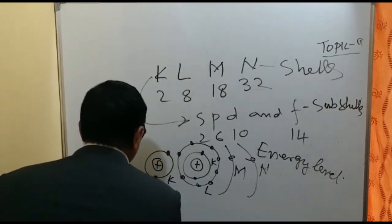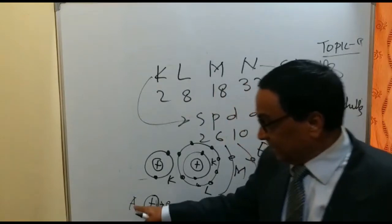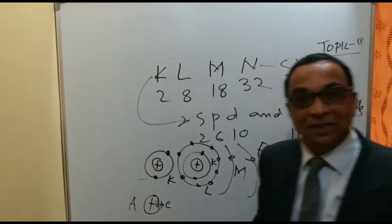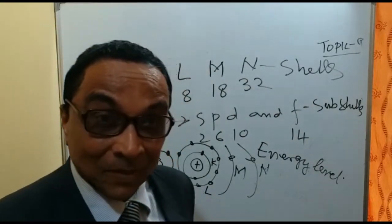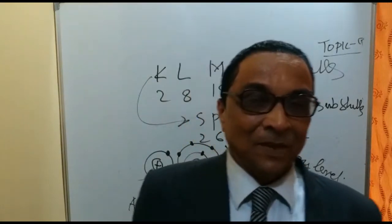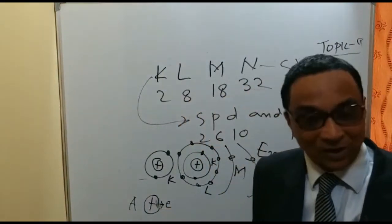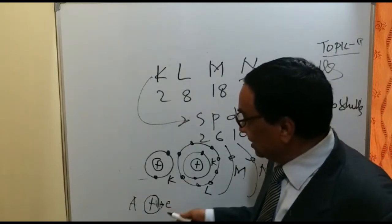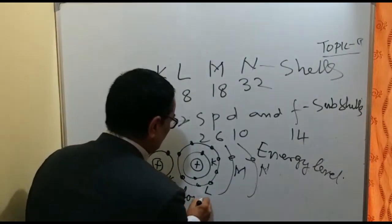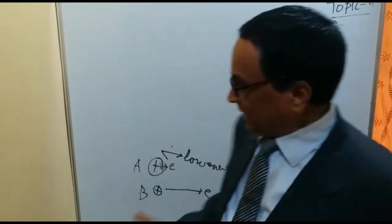Consider condition A and condition B. In condition A, one electron is very close to the nucleus. In condition B, the electron is far away from the nucleus. The question is: which electron will contain more energy — the one very close to the nucleus or the one far away? For your confirmation: the one very close to the nucleus will have low energy, and the one far away will have higher energy.